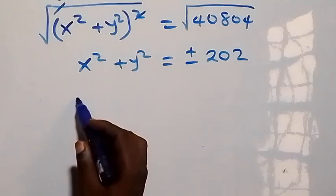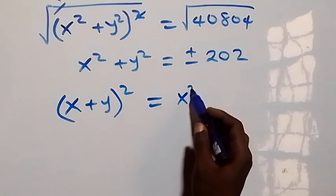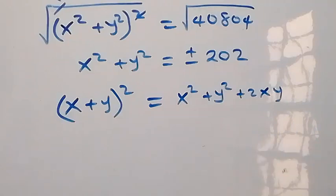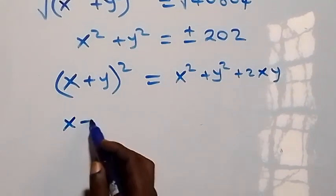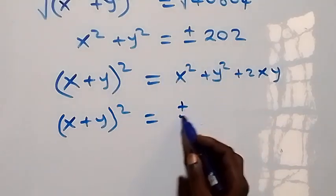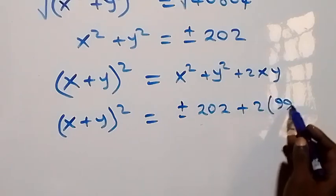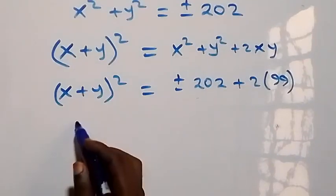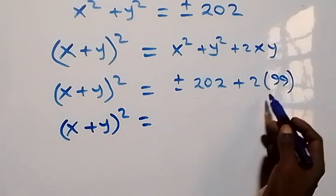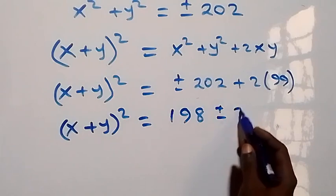Since we are finding x plus y, when we expand (x plus y) all squared the expansion is x squared plus y squared plus 2xy. Now we have (x plus y) all squared equals x squared plus y squared, which is plus or minus 2√2, then plus 2 times xy. From equation 2 xy equals 99, so plus 2 times 99 which is 198. This gives (x plus y) squared equals 198 plus or minus 2√2.